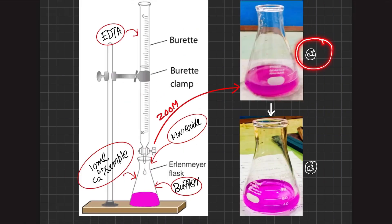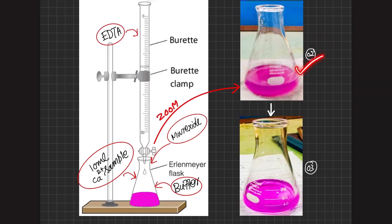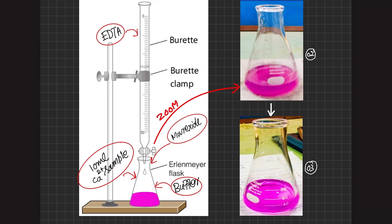Near the equivalence point, the color is purple with a red tone. As we continue adding EDTA and all the metal is complexed by EDTA, the muroxide is set free and its original pure purple color appears. The appearance of this original purple color indicates that the endpoint has been reached and we stop further addition of EDTA.